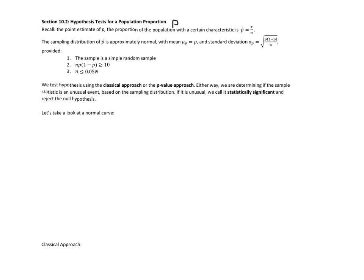We're going to be using our sampling distribution of P-hat. It's approximately normal with our mean equal to P and our standard deviation formula, provided three conditions hold: we have a simple random sample, N times P times 1 minus P is greater than or equal to 10, and N is less than 5% of our population.